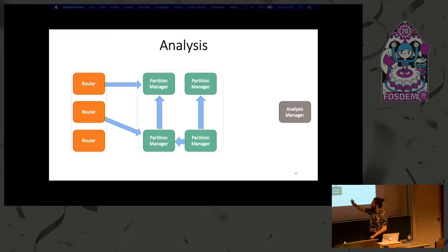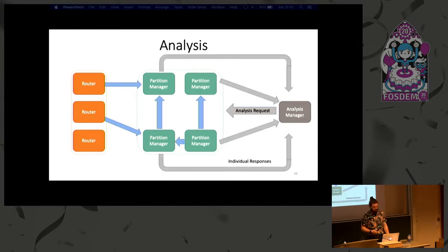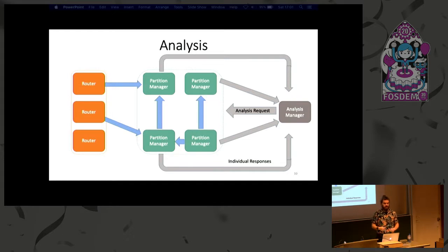The general idea is that the routers are constantly ingesting new information from whatever source you've specified, assuming it's unbounded. The partition managers constantly keep in sync with each other and wait for requests from an analysis manager. The user says they want to run this analysis. All the partition managers will then go through their set of vertices, run this vertex-centric algorithm, and return to the analysis manager. The analysis manager checks whether all vertices have voted to halt or another iteration is required, and this goes back and forth until it's finished and the result is returned to the user.